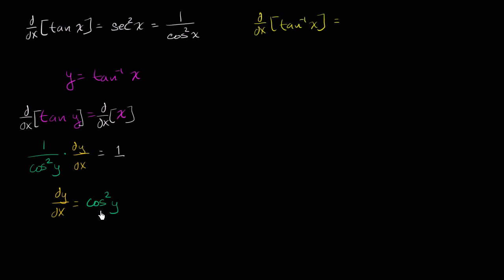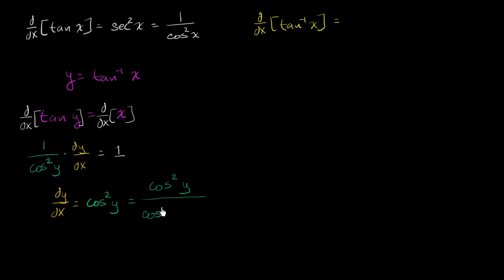One thing we could do is divide by 1 — dividing by 1 never hurt anyone. So we could write cosine squared y over 1. We're doing this to start expressing it as a rational expression that might involve a sine divided by a cosine. But we know from the Pythagorean identity that 1 equals sine squared of y plus cosine squared of y. So we can write the denominator as cosine squared of y plus sine squared of y — and since this equals 1 by the Pythagorean identity, we haven't changed the value of the expression.